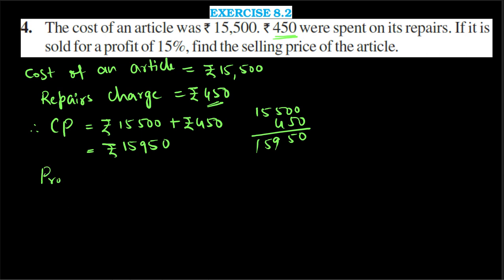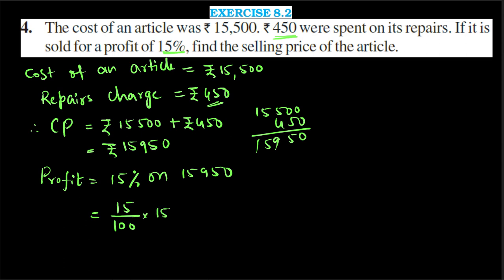Profit equals 15% on the cost price, that is 15% on Rs. 15,950. That equals 15/100 times 15,950. Simplifying: cancelling zeros and dividing by 5, this becomes 3 times 1595 divided by 2, which equals 4785 divided by 2.